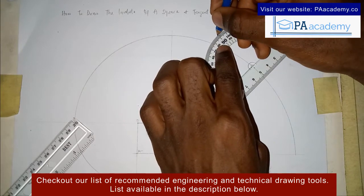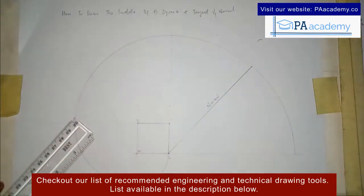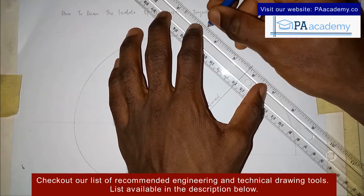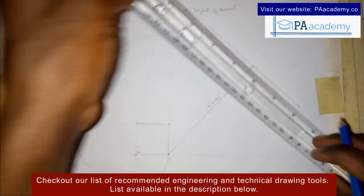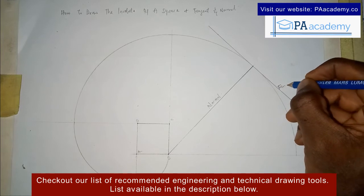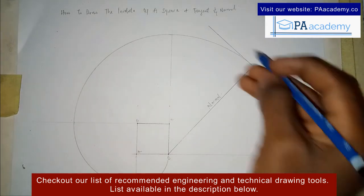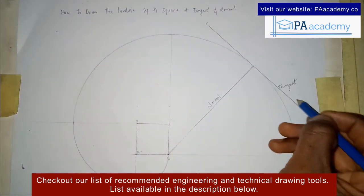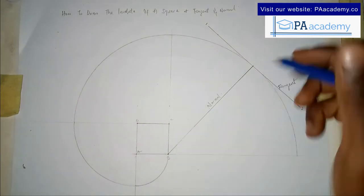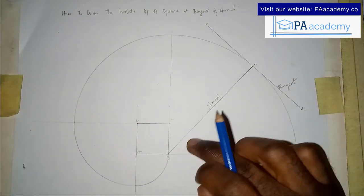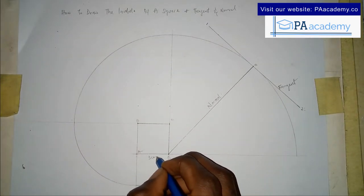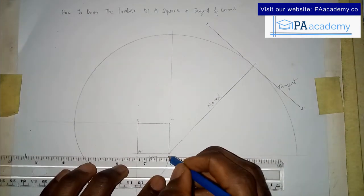This line I've just drawn represents the normal. Now to get the tangent, you bring in your protractor and draw a line that's perpendicular to the normal. Don't forget a tangent and a normal are perpendicular to each other — that means an angle of 90 degrees. So you bring in your protractor to 90 degrees and draw the tangent line.